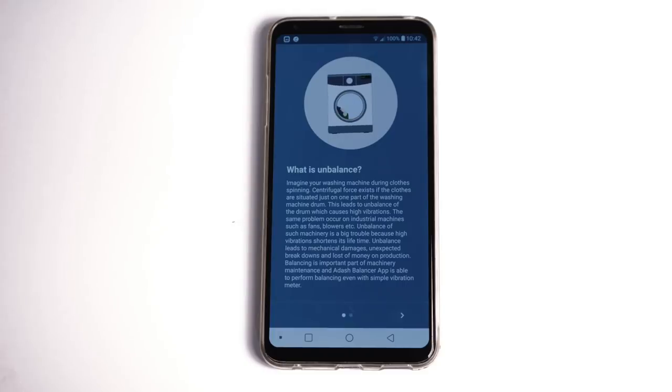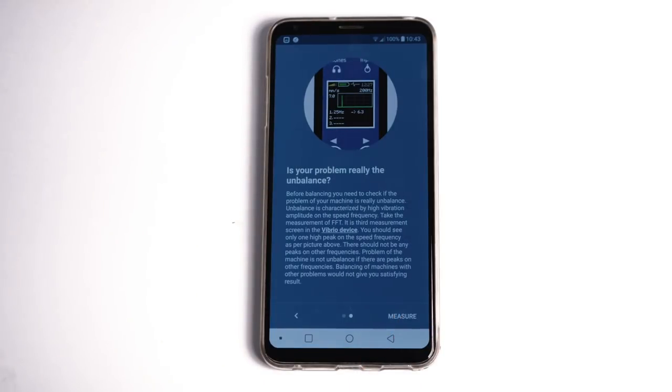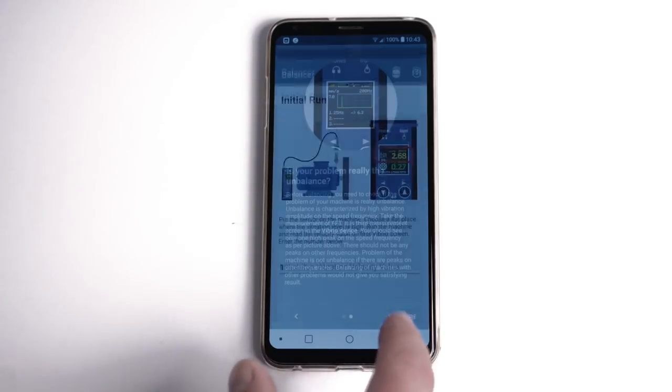Run the Balancer app and take a look at the first two introduction screens. The first one explains what unbalance is and the second one guides you to discover if the problem of your machine is really unbalance. Go to another screen to start the balancing job.